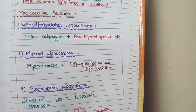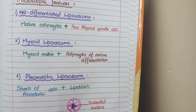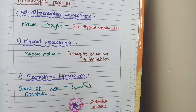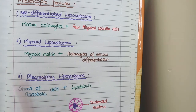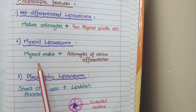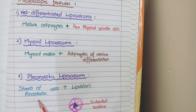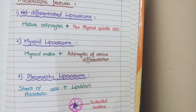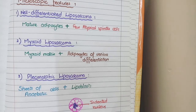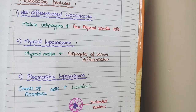In summary: in well-differentiated liposarcoma, you see mature adipocytes and few atypical spindle cells. In myxoid liposarcoma, you see abundant mucoid matrix and adipocytes of various differentiation. In pleomorphic liposarcoma, you see sheets of anaplastic cells containing lipoblasts — large-sized cells with a centrally indented or scalloped nucleus. This concludes the pathology of lipoma and liposarcomas.